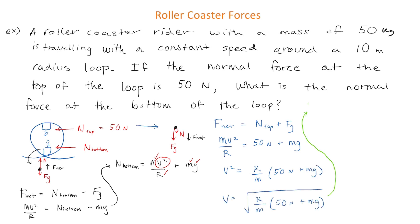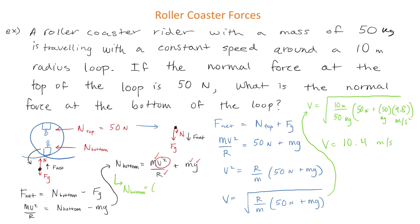Once we've isolated for speed and plugged in our values, we find that the speed of the rider at the top of the loop is 10.4 m/s. Now we have everything we need to solve for the normal force at the bottom of the loop. Returning to our first equation, all we have to do is plug in our values.